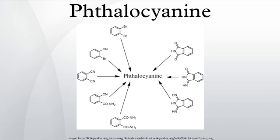Phthalocyanine is an intensely blue-green-colored aromatic macrocyclic compound that is widely used in dyeing. Phthalocyanines form coordination complexes with most elements of the periodic table. These complexes are also intensely colored and are used as dyes or pigments.